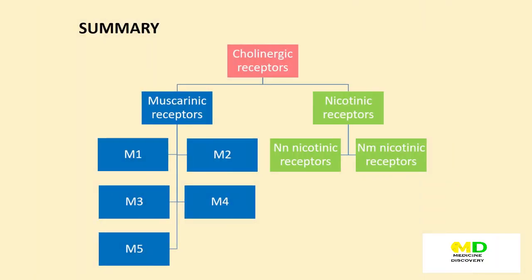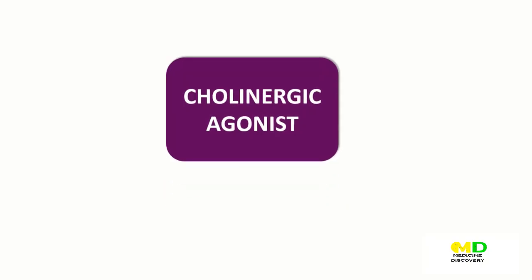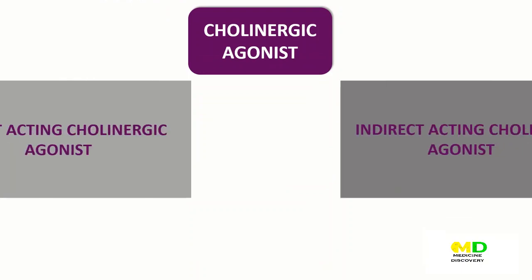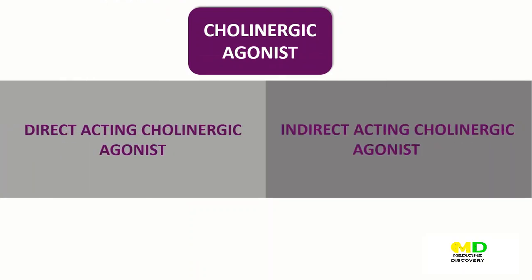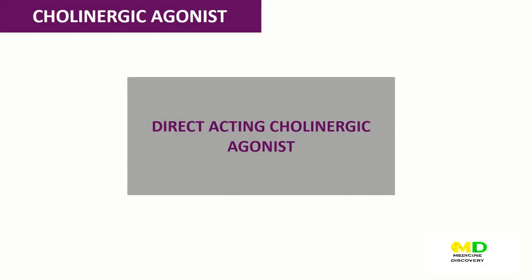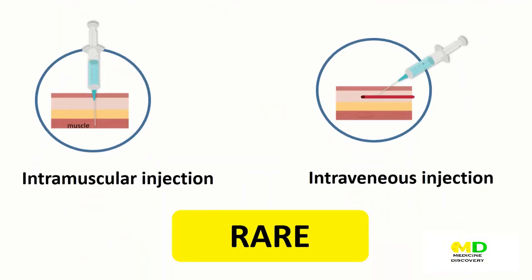Now we are ready to jump to the drugs. Cholinergic agonists promote the action of the neurotransmitter acetylcholine. These drugs are also called parasympathomimetic drugs because they produce effects that imitate parasympathetic nerve stimulation. Cholinergic agonists are divided into direct-acting and indirect-acting cholinergic agonists. Direct-acting cholinergic agonists are usually administered topically with eye drops, orally, or by subcutaneous injection, which begins to work more rapidly than oral doses.